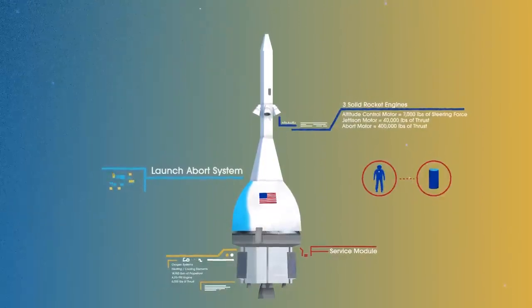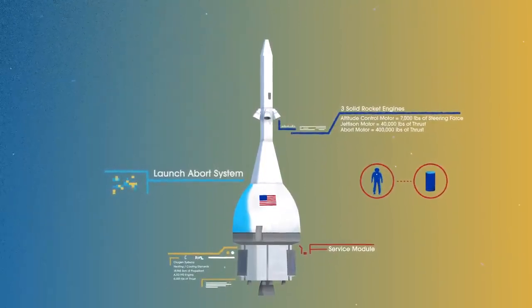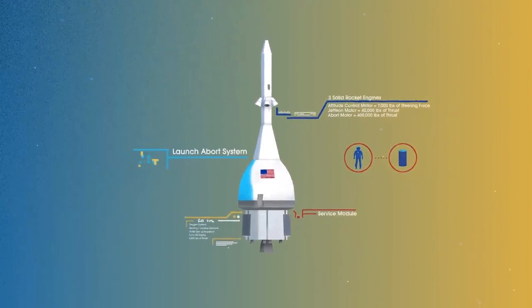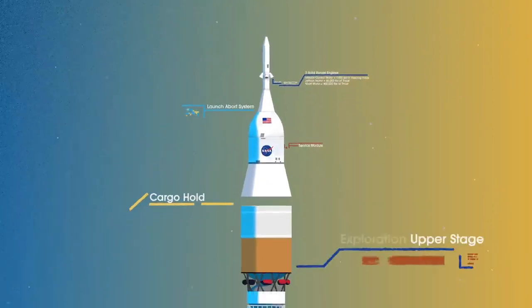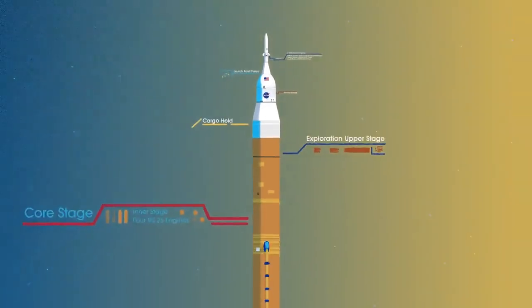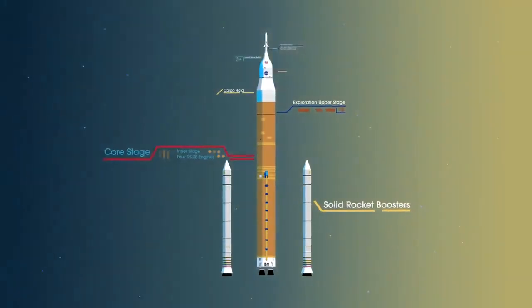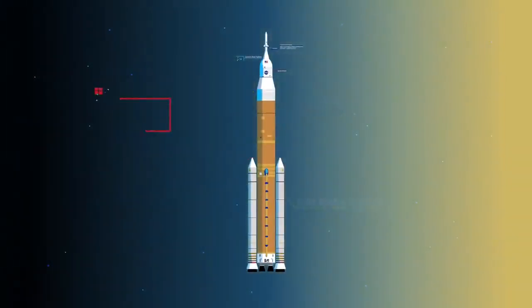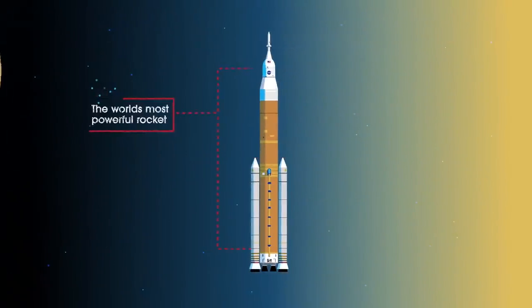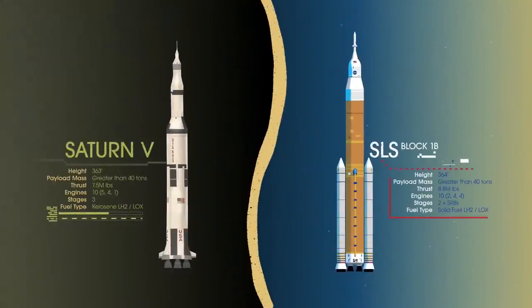To accomplish the task of launching our crew and heavy payloads, NASA is building the Space Launch System, comprising a cargo hold, an exploration upper stage, a massive core stage, and two extended solid rocket boosters. Altogether, this is the world's most powerful rocket, and it exceeds the legendary Saturn V of the Apollo era in numerous ways.